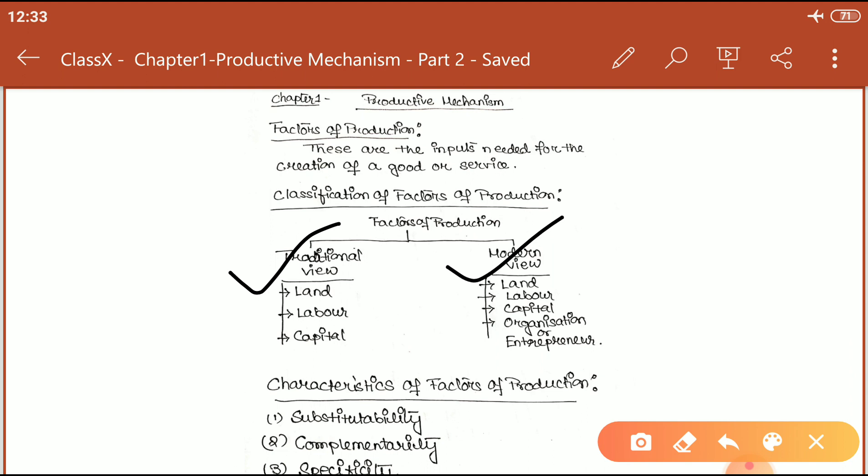But according to modern economists, there is another important factor which should be included in factors of production: organization or entrepreneur.